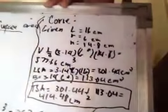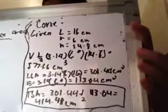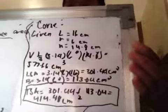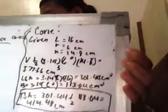The length is 16 cm, then the radius is 6 cm, then the height is 14.8 cm. So this is how we compute.